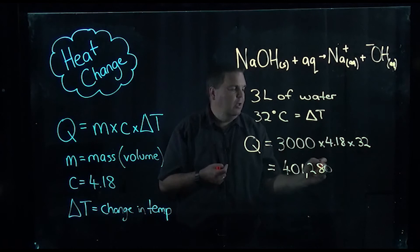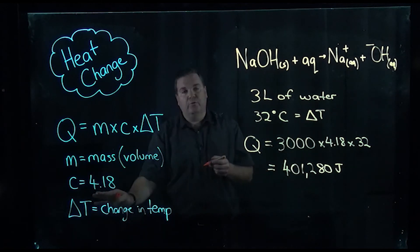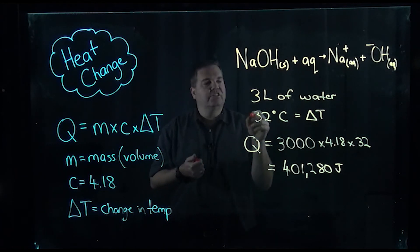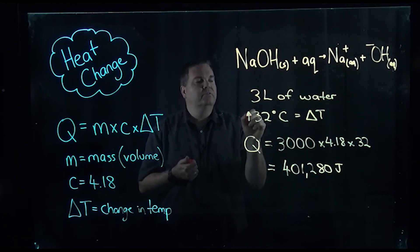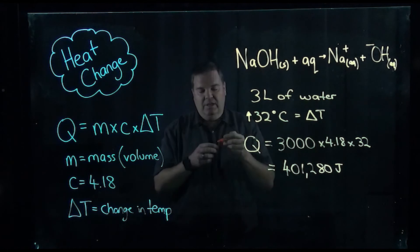And the units for that is joules, because what we're doing is we are using 4.18 joules of energy to raise one mil by one degree. Now because the temperature in this reaction went up, it's what we call an exothermic reaction.